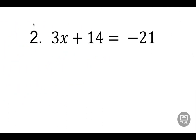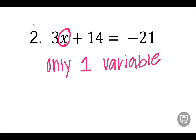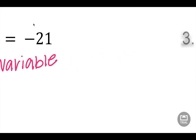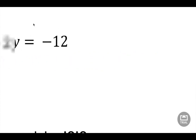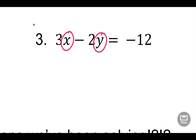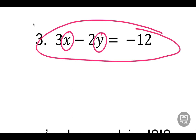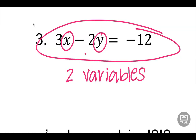If I look at number two, is this one a literal equation? Well, there's my X. Do I have any more? No. This is just like a regular equation we would solve. So this is not a literal - only one variable. And if I look at number three, I've got an X and I've got a Y. Is that a literal? Yes, because literal is two or more. There's two variables, so it is literal.